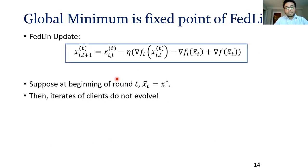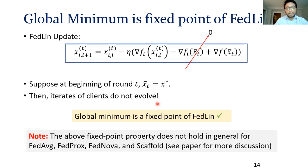There's a very interesting property of our update rule. Suppose at the beginning of round t, the global model is the true minimizer. If that's the case, we can easily argue that this term evaluates to zero and the iterates of the clients don't evolve at all. So what this is saying is that if we initialize our algorithm from the global minimizer, it stays at the global minimizer exactly as desired. The global minimum is a fixed point of FedLIN, which is a very desirable property to have, but none of the other algorithms that I talked of have this property.